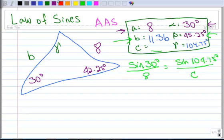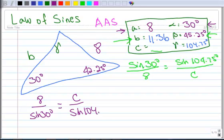So I could say that 8 is to the sine of 30 degrees as C is to the sine of 104.75 degrees. And so now I just have to multiply both sides by the sine of 104.75 degrees. So that makes my algebra just a teeny bit easier.